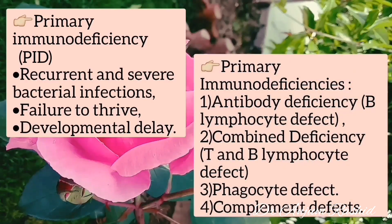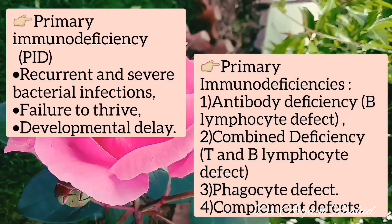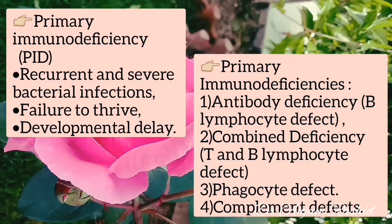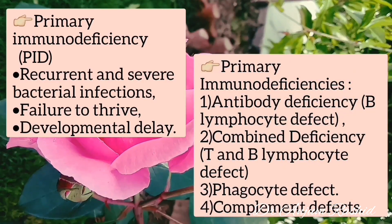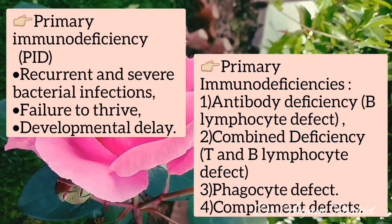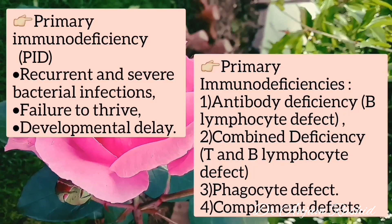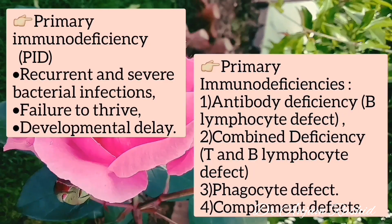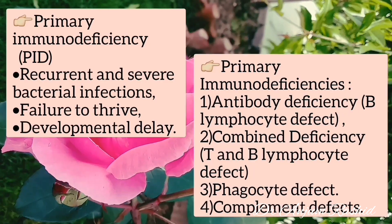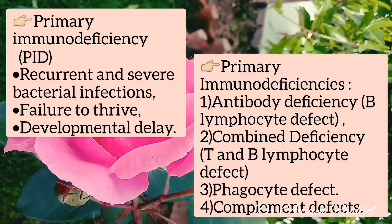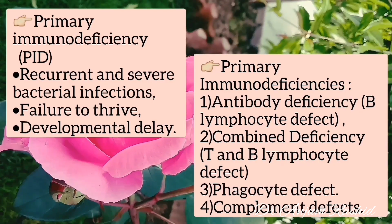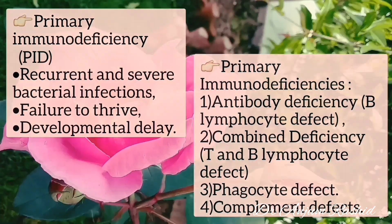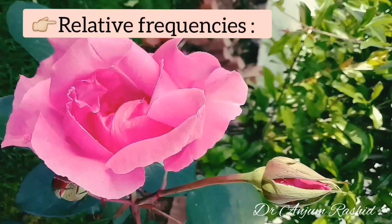Primary immunodeficiency is divided into four categories: number one, antibody deficiency or B lymphocyte defect; number two, combined deficiency, that is T and B lymphocyte defect; number three, phagocytic defect; and number four, complement defect.